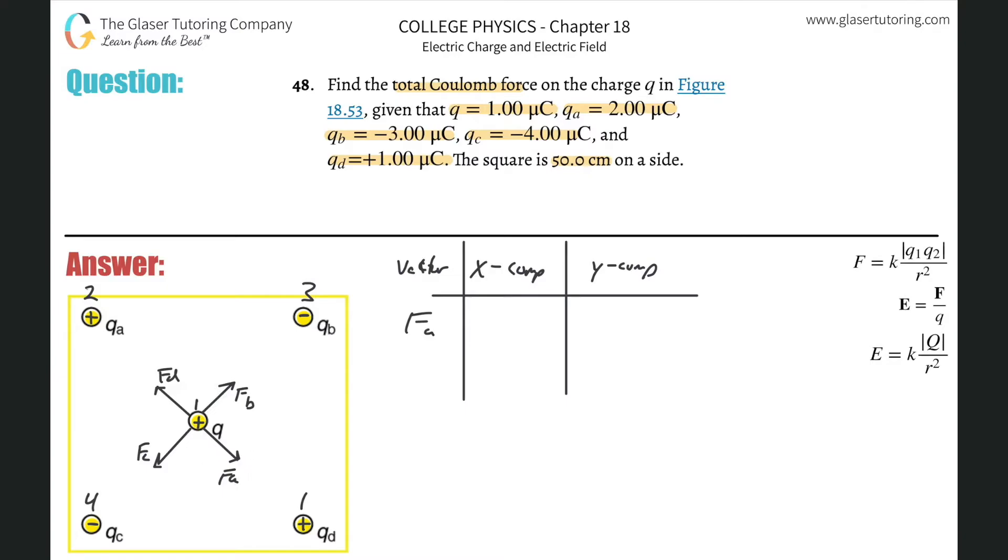Now, what do we need to do in order to actually find F sub A? Well, we know the force between the charge A and Q is going to be equal to K times QA times Q all over the distance between them squared. So finding the force value, it's going to be 8.99 times 10 to the ninth times Q sub A, which is 2 times 10 to the minus six times Q, which is 1 times 10 to the minus six, all divided now by the distance between them squared. What's the distance between them? Well they didn't tell us, but they told us this thing is a square, that's 50 centimeters on the side.